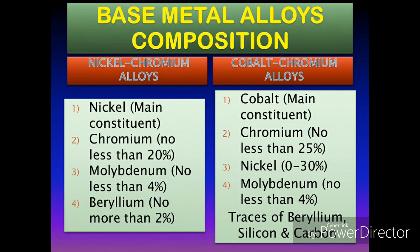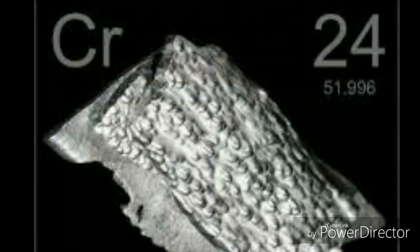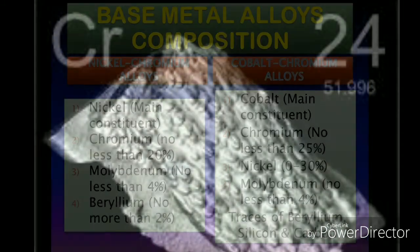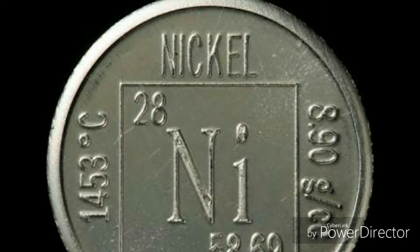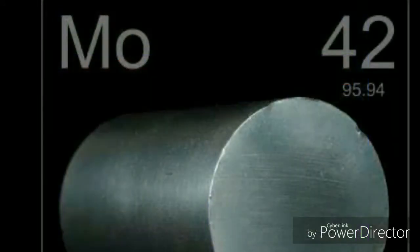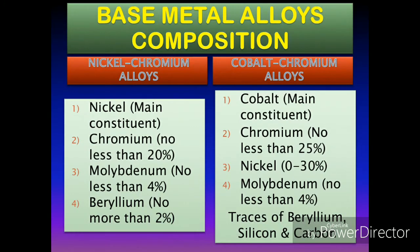The cobalt-chromium casting alloys consist of cobalt, chromium, nickel, molybdenum, and mild traces of beryllium, silicon, and carbon. Cobalt is the main constituent, whereas chromium should not be less than 25%, nickel ranges from 0 to 30%, and molybdenum should not be less than 4%. Cobalt and nickel are hard and strong metals.